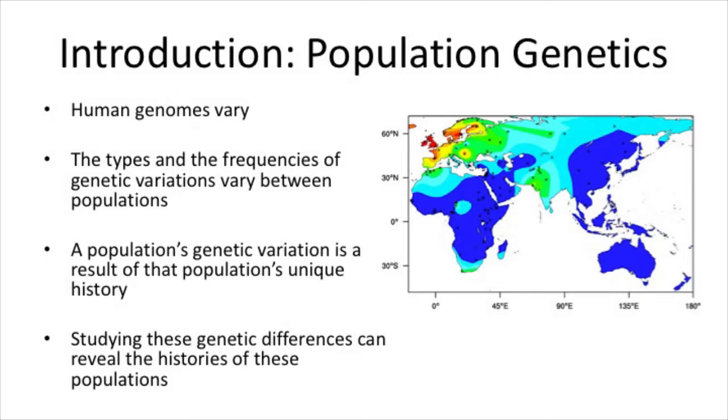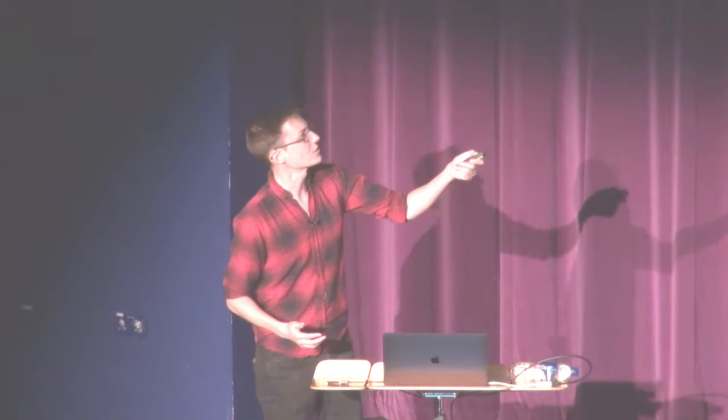The types and frequencies of genetic variants differ within and between populations. This heat map shows one particular mutation — the warmer the color, the more frequent that mutation is in the world. You can see it's most common within Britain, specifically Ireland. This mutation is a single letter change just before a gene called LCT. What it does is keep LCT being produced into adulthood so you can digest milk as an adult. Digesting milk as an adult is quite unusual in the animal kingdom, but humans have evolved a number of different mutations that allow this — and this is the European version.